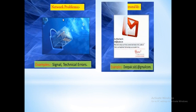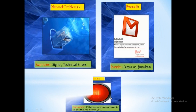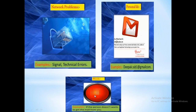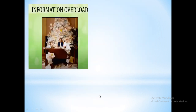Network problems can arise — for example, if someone is trying to send an email to gmail.com but makes a typing error or if a network problem occurs, the user on the other side may block you. Next is information overload.